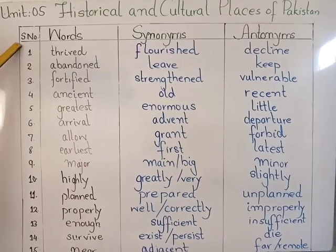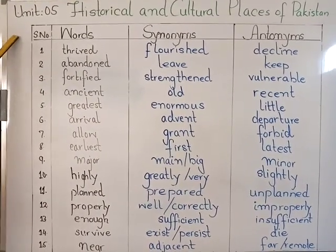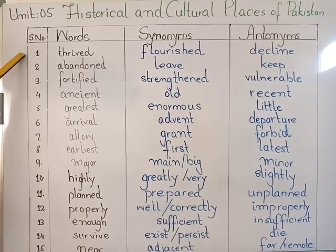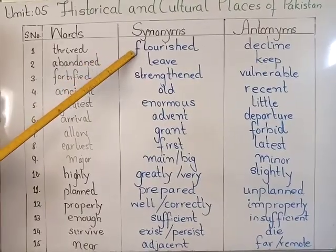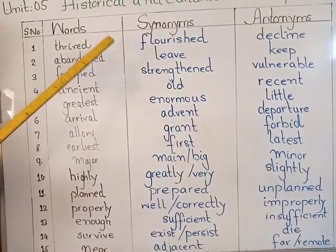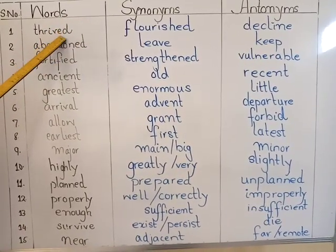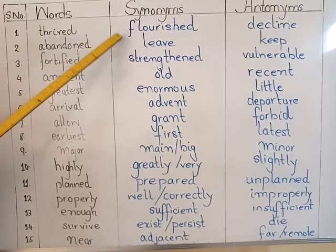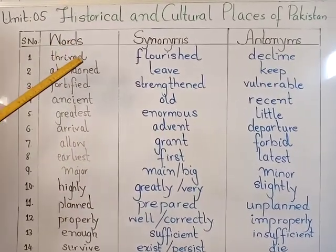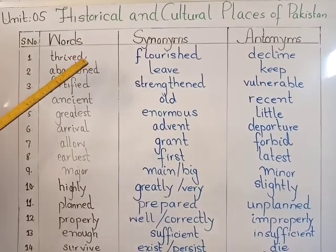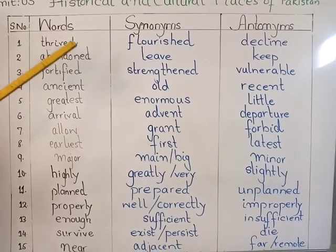For today's next task, I have also written synonyms and antonyms. There are fifteen words altogether — you can copy these words, synonyms and antonyms into your notebook. One important rule: for synonyms and antonyms, the part of speech must be the same as the given word, and they should be a single word — not more than one word, except for phrasal verbs.